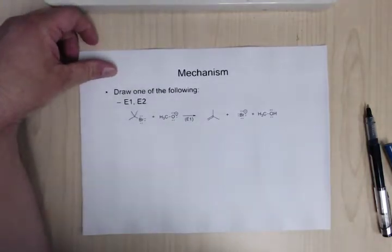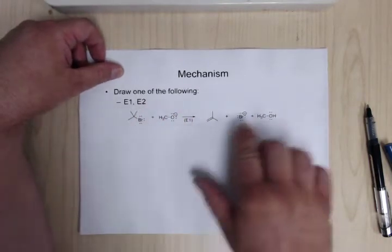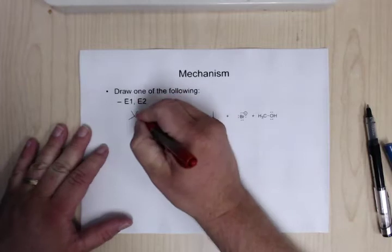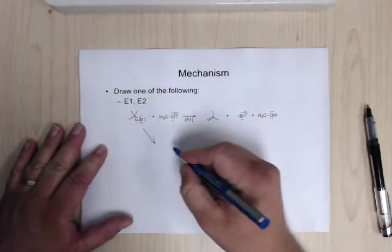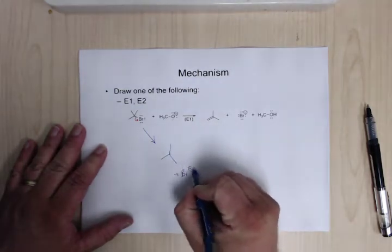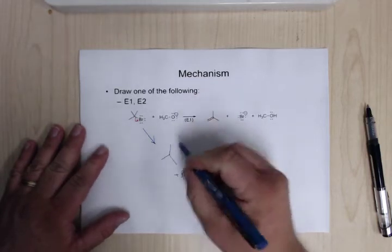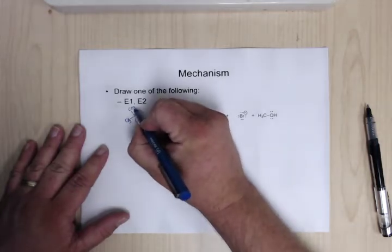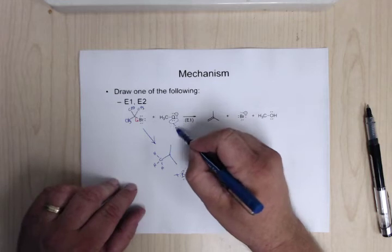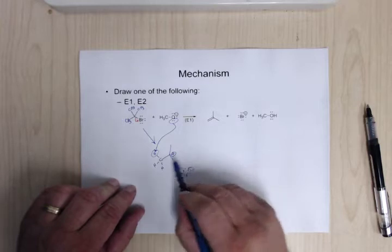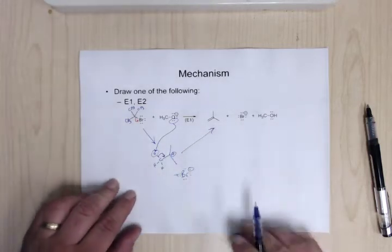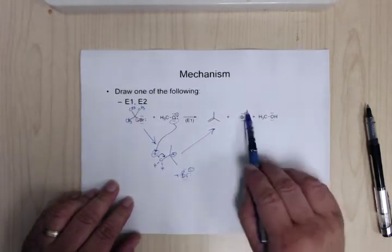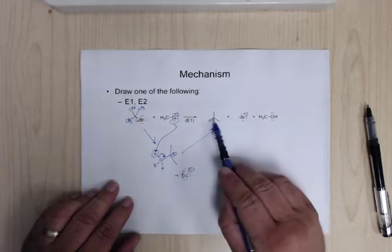You will also have an E1 or E2 mechanism. I'll give you the starting materials and product and tell you if it's E1 or E2, and that's the mechanism you draw. The first step in all of these — whether E1 or S1 — is the leaving group leaves, giving you a carbocation plus Br minus. From there, the base comes in, grabs a hydrogen, and those electrons collapse to make the double bond. The electrons in the C-H bond are the ones that form the double bond.